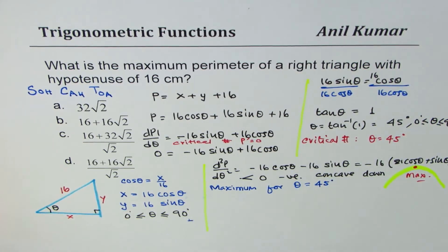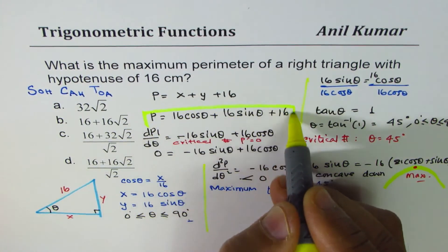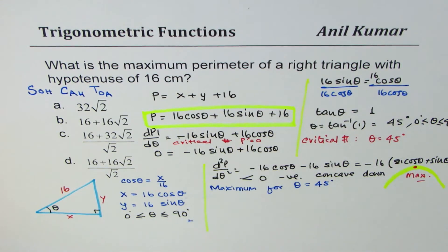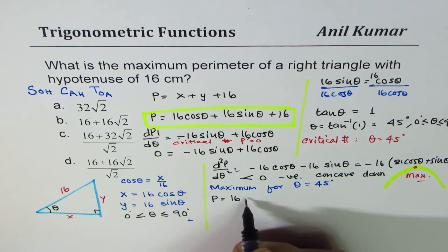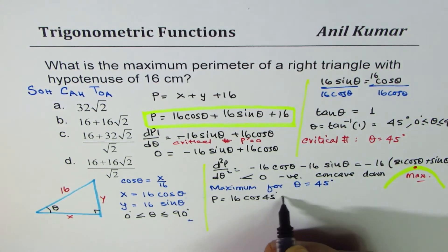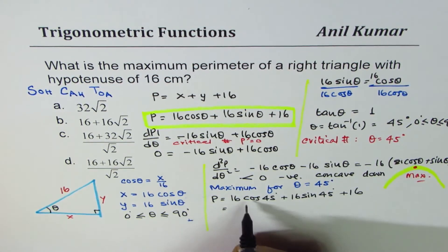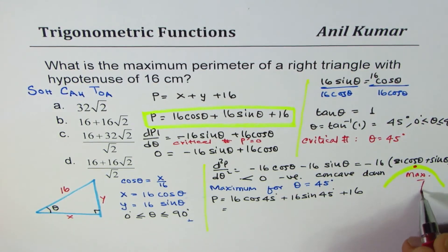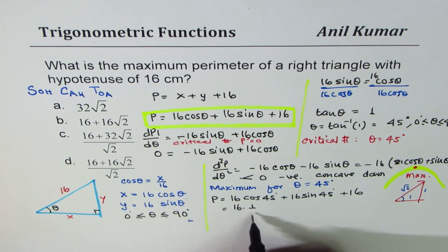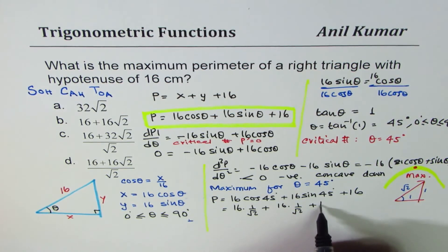We know theta is 45 degrees. Let's substitute the values in the formula which we have: perimeter equals 16 cos of 45 degrees plus 16 sin of 45 degrees plus 16. For 45 degrees, 1 over square root 2 is the value of cos theta and sin theta. So we get 16 times 1 over square root 2 plus 16 times 1 over square root 2 plus 16.